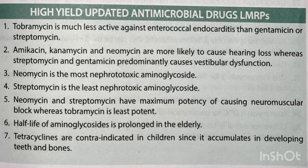Tobramycin is much less active against enterococcal endocarditis than gentamicin or streptomycin. Amikacin, kanamycin and neomycin are more likely to cause hearing loss whereas streptomycin and gentamicin predominantly cause vestibular dysfunction. Neomycin is the most nephrotoxic aminoglycoside. Streptomycin is the least nephrotoxic aminoglycoside. Neomycin and streptomycin have maximum potency of causing neuromuscular block whereas tobramycin is least potent. Half-life of aminoglycosides is prolonged in the elderly.